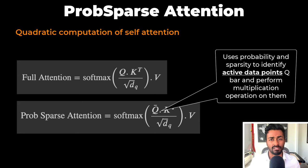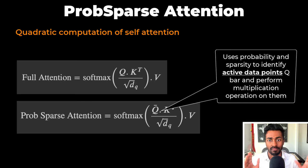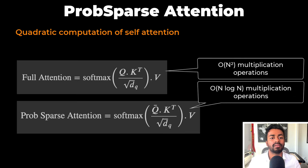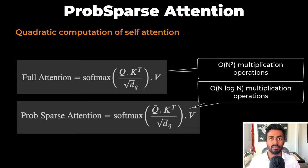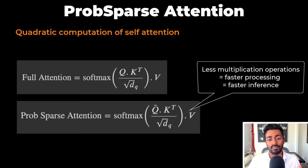And this can be costly for large input sequences. The informer architecture addresses this using prob-sparse self-attention, which involves using the concepts of probability and sparsity to identify a subset of active data points and only perform multiplication operations with them. With this type of attention, we can reduce the number of multiplication operations from the order of n squared — which is quadratic in input — to the order of n log n. Less multiplication operations means faster processing during a forward pass, which means faster inference.